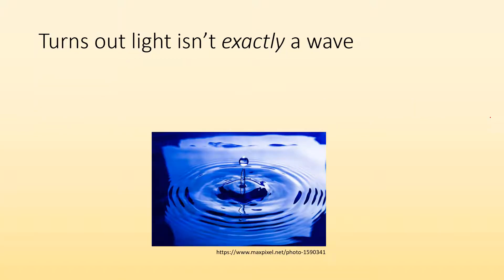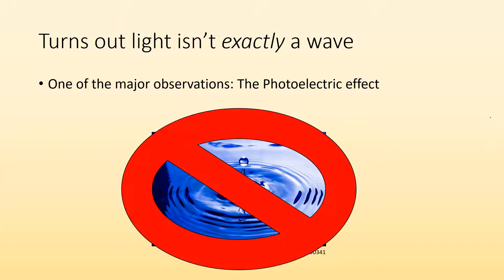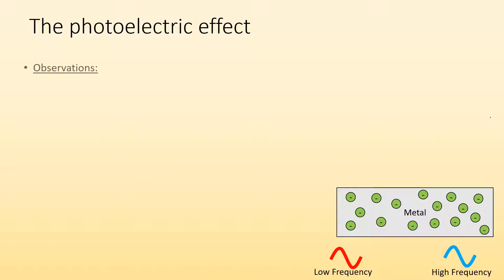Turns out light isn't exactly a wave. One of the major observations that led to this conclusion is the photoelectric effect. Here are the observations. When light hits a metallic surface, electrons may be emitted. So let's see what that looks like. You get a little photon of light. Boom. It gets absorbed. It kicks off an electron.